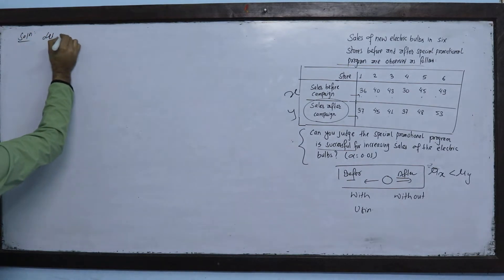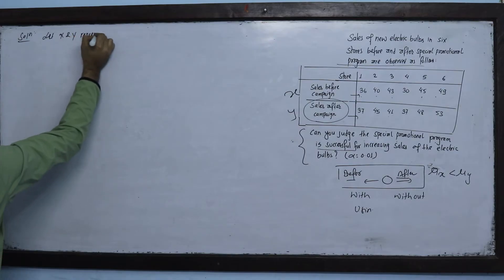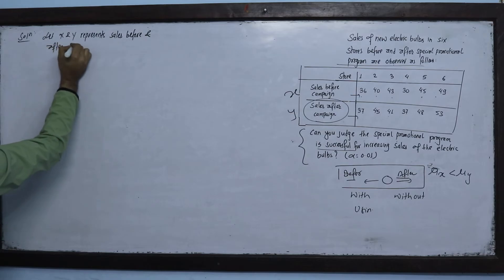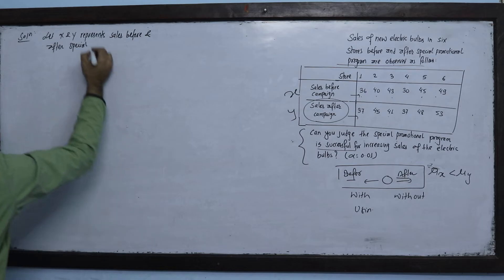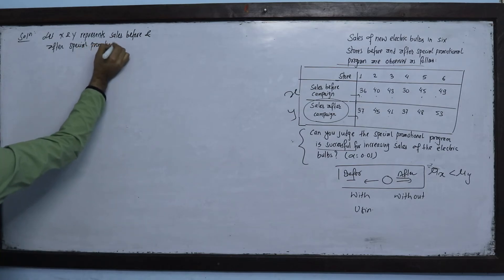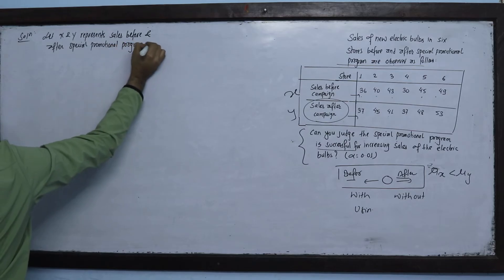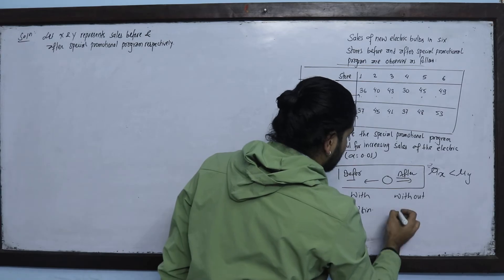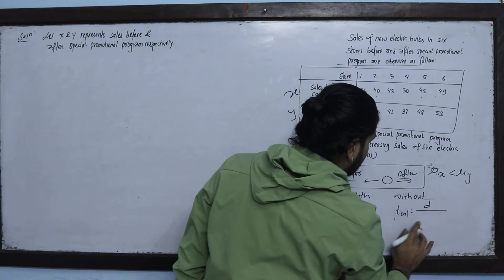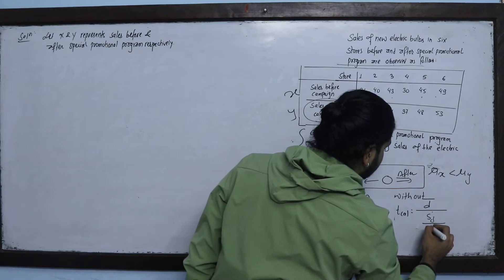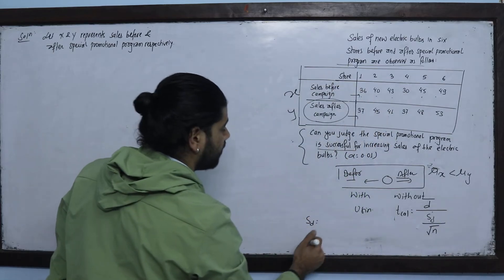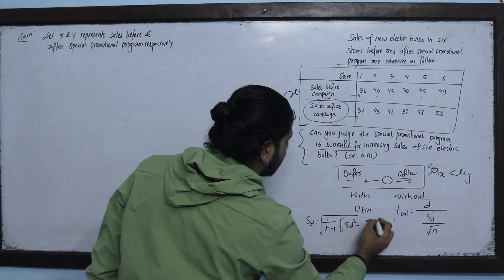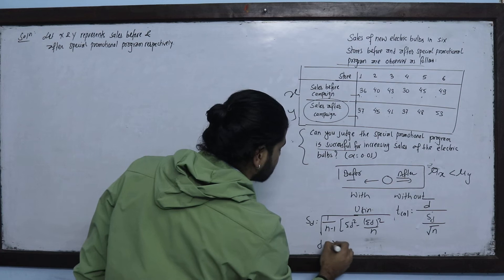Let X and Y represent sales before and after the special promotional program. We have T calculated = D-bar divided by (SD divided by root n). This is the standard deviation of the dependent sample. D is defined as either X minus Y or Y minus X.